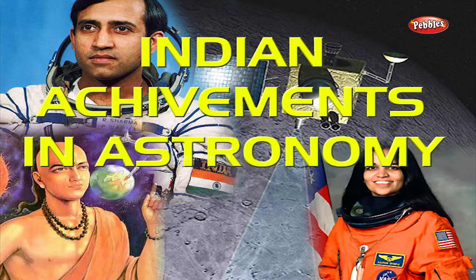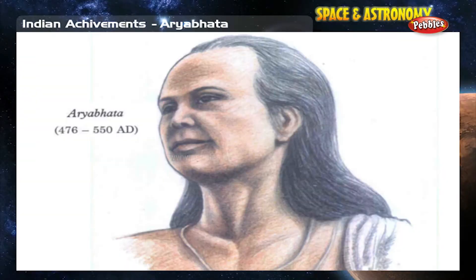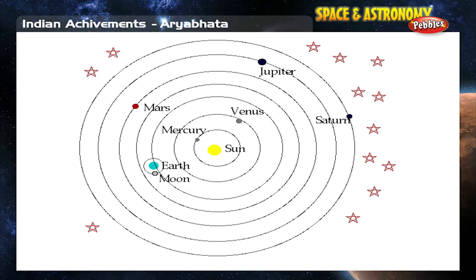The Indian astronomer and mathematician Aryabhata, in his magnum opus Aryabhashya, propounded a mathematical heliocentric model in which the Earth was taken to be spinning on its axis and the periods of the planets were given with respect to a stationary sun.